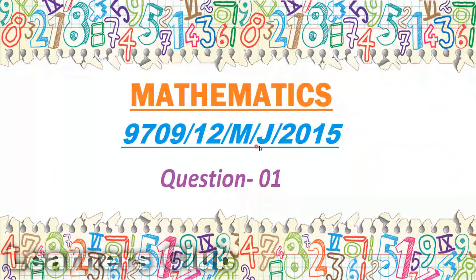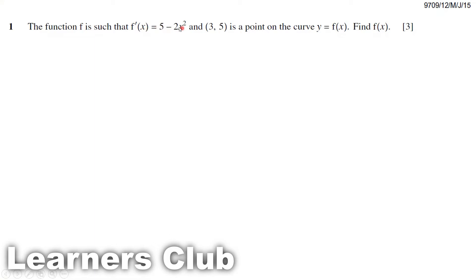Mathematics 9709, May June 2015, Paper 12, Question 1. The function f is such that f'(x) is equal to 5 minus 2x squared, and the coordinate (3, 5) is a point on the curve y equals f(x). Find f(x).